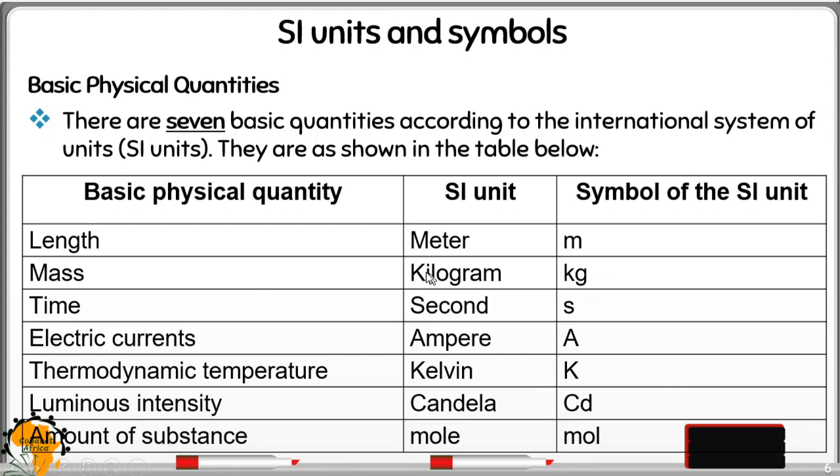Again, if you look at mass, the SI unit is kilogram. The symbol is small k and small g. If you write a capital K or a capital G, that is a different thing.